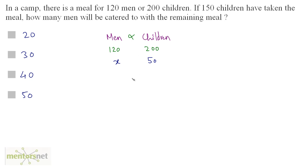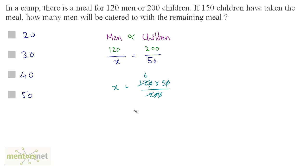What is the equivalent number of men those 50 children are? As this is a direct proportion, we can divide and equate. The value of X is equal to 120 times 50 divided by 200. The zeros get cancelled out — 6 times 5 is 30. So X is equal to 30. Option B is the correct answer.